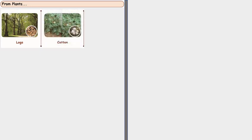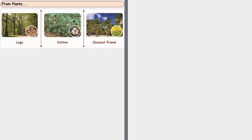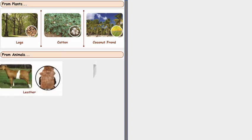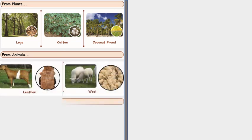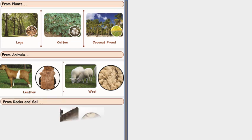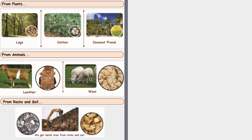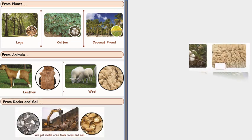Now from plants what can we get? We can make logs. We can get cotton and coconut fronds. From animals we can get leather and wool. From rock and soil we can get metal ores.